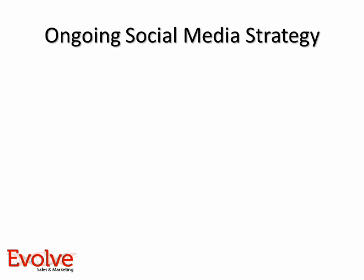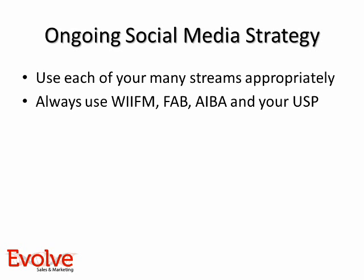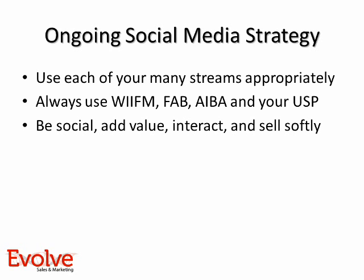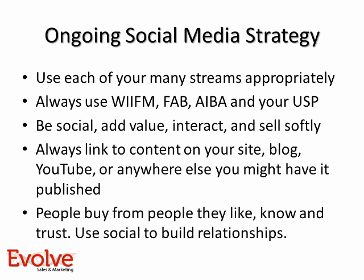So let's look at an ongoing social media strategy and what's important there. Make sure that you use each of your various streams appropriately. Always use what's-in-it-for-me messaging — facts, advantage, benefits, attention, interest, desire, and take action — and your unique selling point. Be social, add value, interact, and sell softly. On social, don't try and sell too hard. Always link to content on your site, or your blog, or your YouTube, or anywhere else you might have it published. People buy from people they like, know, and trust — so use social to build relationships.